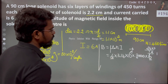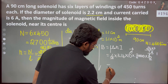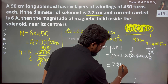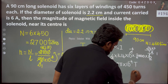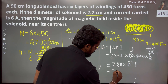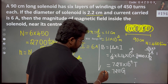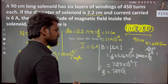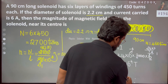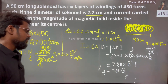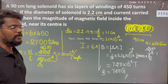The result is 72π into 10 to the power minus 4 Tesla. You can also write this as 72 multiplied by 3.14 to get the numerical value of the magnetic field.